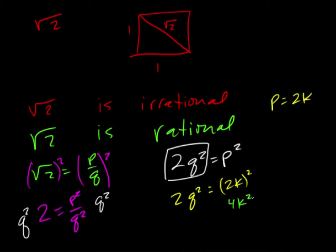...out we get that, and then if we divide both sides by 2, q squared is equal to 2k squared.